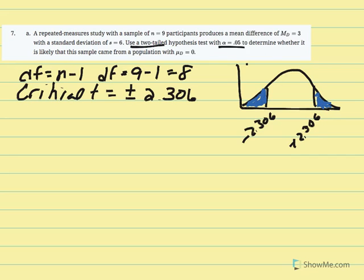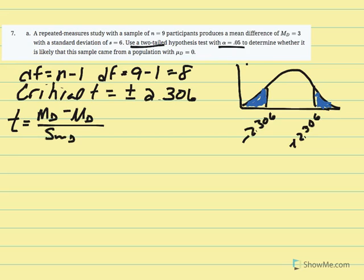Now we calculate our t value. In this chapter, t equals the sample mean difference minus the hypothesized population mean difference — which is always zero — divided by the estimated standard error of the mean difference. In this example we have standard deviation rather than variance, so the alternate equation for estimated standard error is standard deviation over the square root of n.